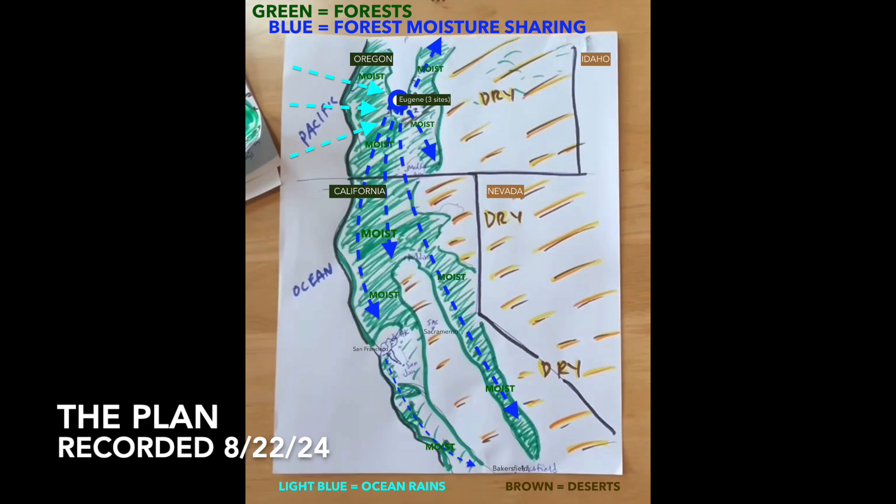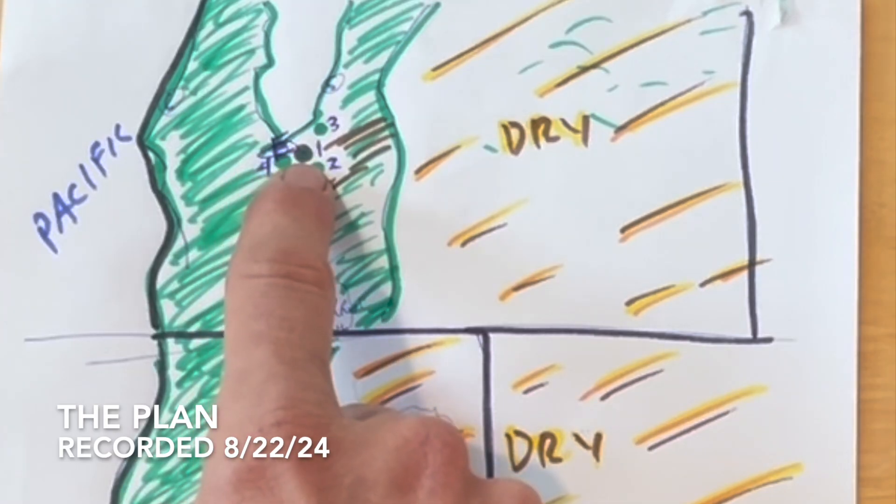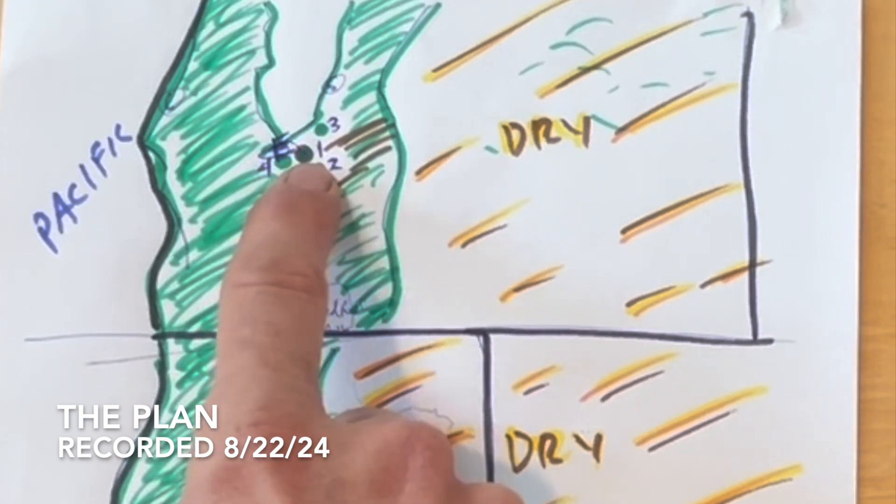I started here in Eugene. I was hoping to get a little bit north of Eugene. These are my initial plannings. I ended up all southeast of Eugene and in Eugene, so down in this area around number two.